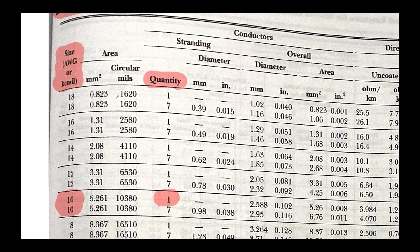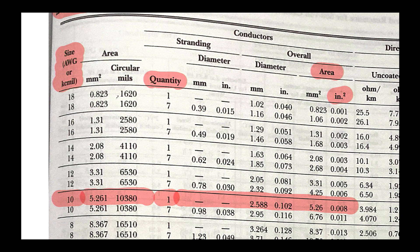Now we look for the area — and again we're looking for inches squared, not millimeters squared, so don't let that mess you up. I'll draw a line all the way across so we can see this more easily. At the intersection of the area column for square inches and 10 AWG bare conductor, we see the answer is 0.008 square inches.